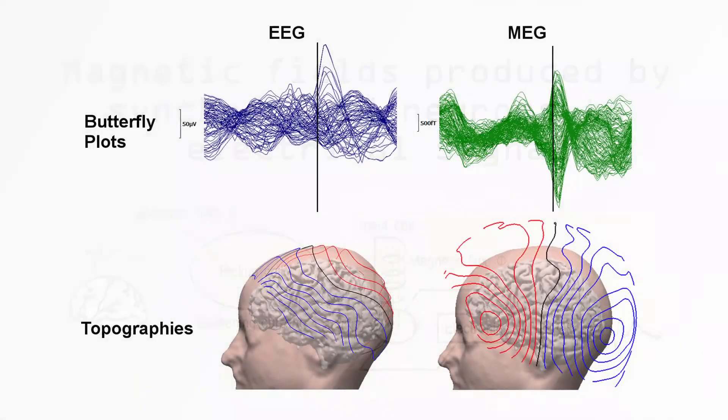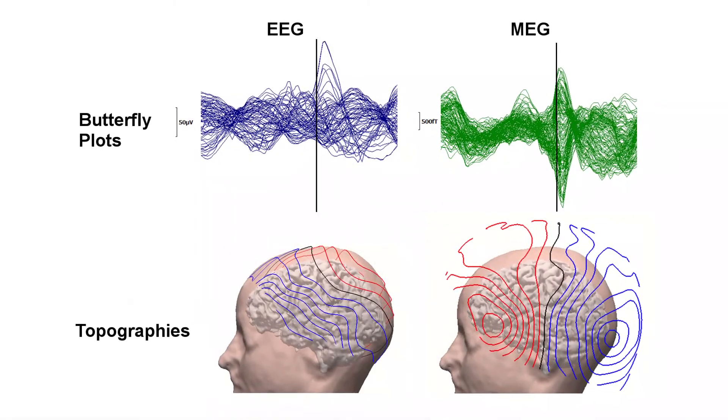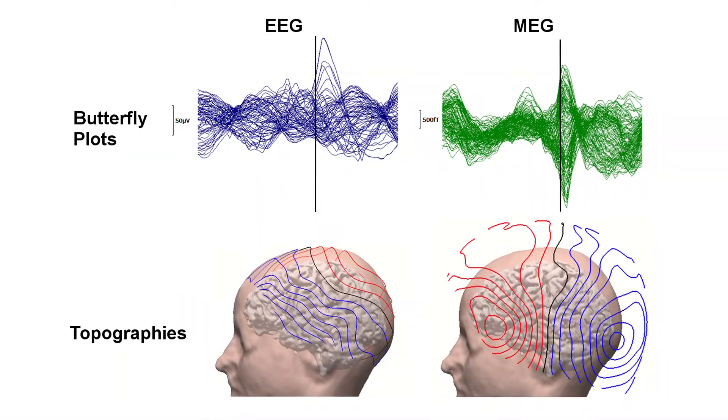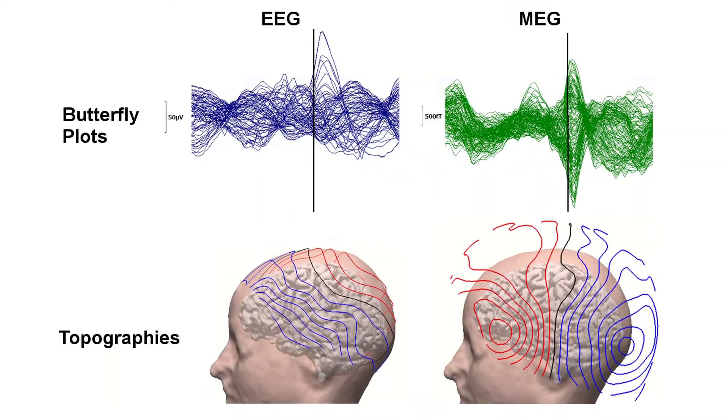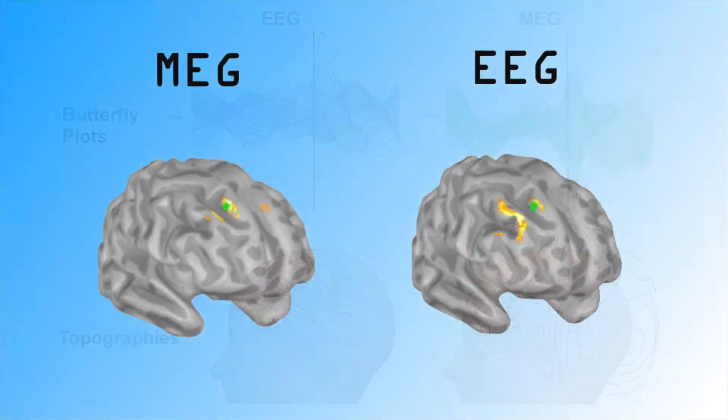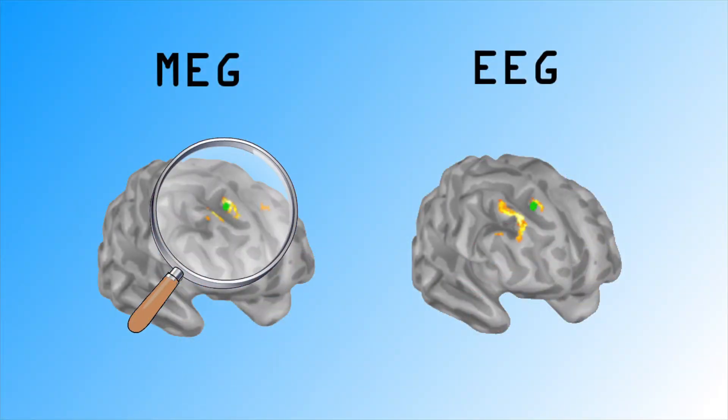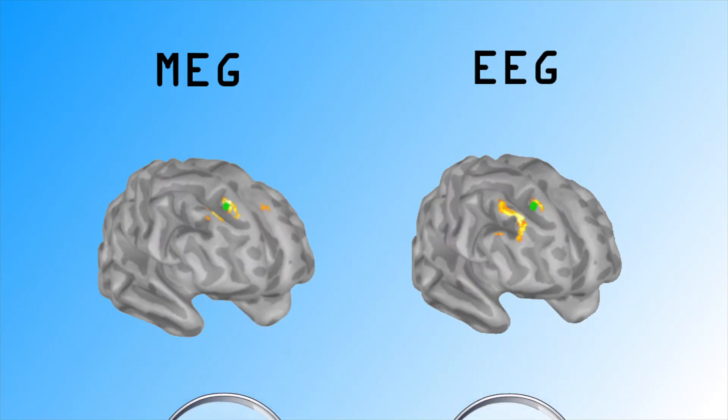Despite the different ways of picking up these signals, EEG and MEG pick up quite similar neurophysiological processes. Not entirely the same though, because MEG primarily picks up signals from sulcal walls, whereas EEG picks up signals from both gyri and sulci.